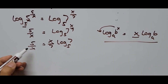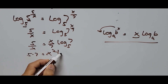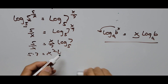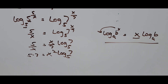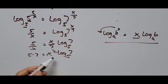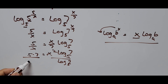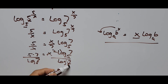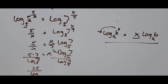Cross-multiplying, we have 5 times 7 equals x times x — that is x squared — times logarithm of 7 base 5. To isolate x squared, we divide both sides by logarithm of 7 base 5. This cancels the log on the right, giving us 35 divided by log of 7 base 5.